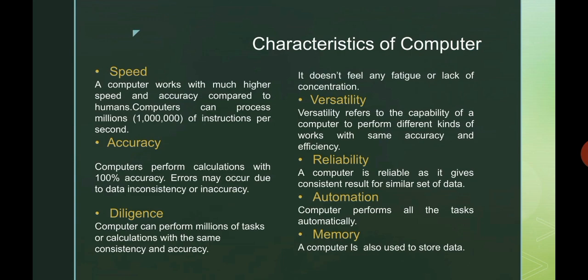Now come to the second point: characteristics of computer. We are going to learn a few characteristics which are speed, accuracy, diligence, versatility, reliability, automation, and memory. First is speed. A computer's speed is much higher than a human's. It performs millions of instructions per second.